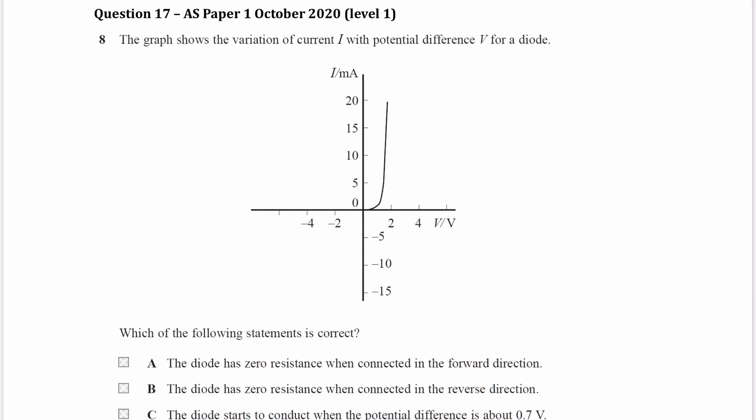So we have a graph. It shows the variation of current with potential difference for a diode. And we're trying to figure out which of the following statements is correct. So let's go through each one and think about whether they could be correct or incorrect.